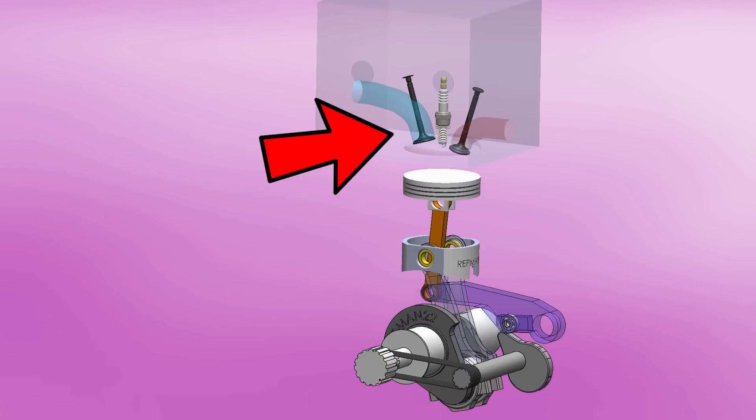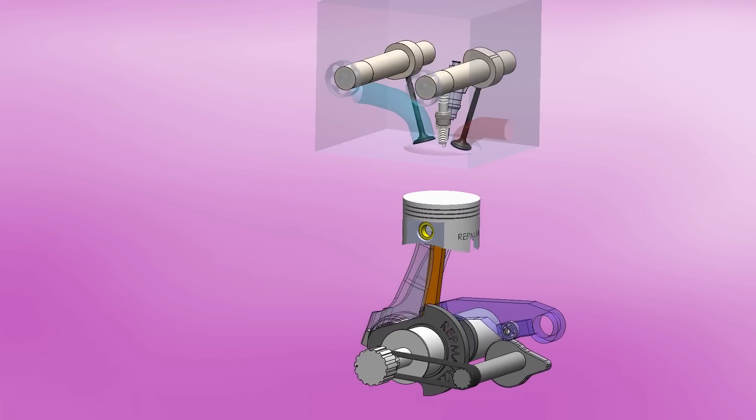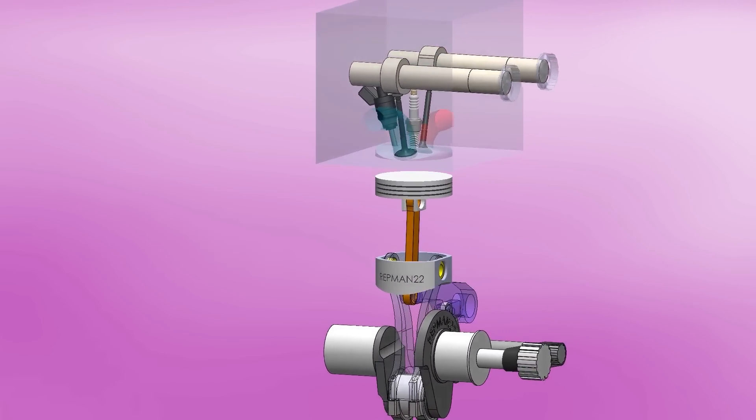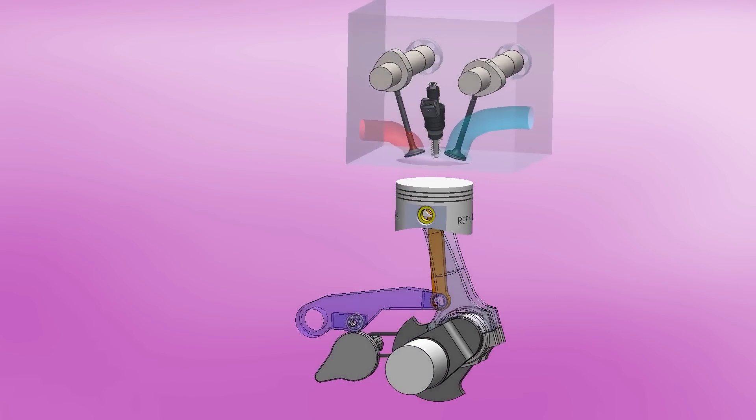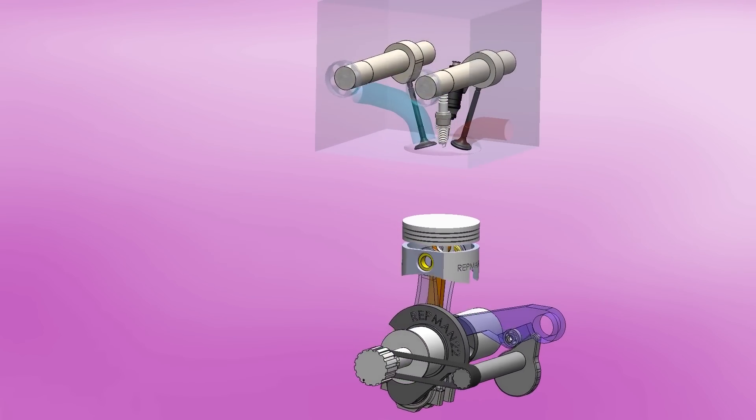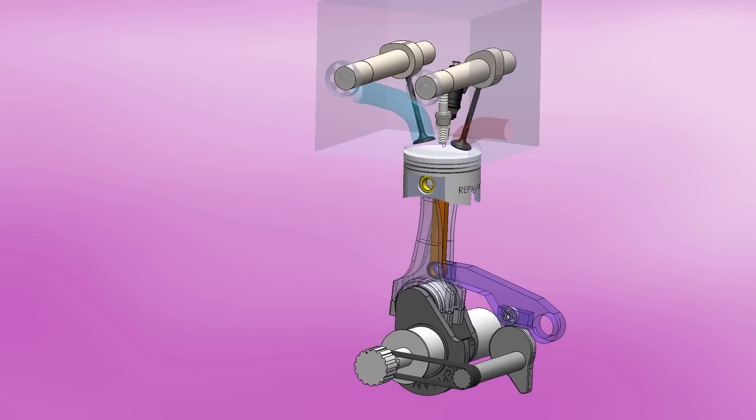Then we have the valves at the top, with camshafts, which also rotate at the same speed as the crankshaft. Remember that in a four-stroke engine, the cams rotate at half speed. Here, two the same. Now that we've covered all the parts, let's look at its dual cycle.